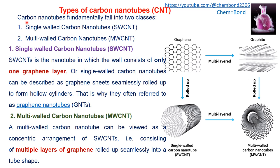Carbon nanotubes fundamentally fall into two classes: single-wall carbon nanotubes (SWCNTs) and multi-wall carbon nanotubes (MWCNTs). Single-wall carbon nanotubes are nanotubes in which the wall consists of only one graphene layer — a monolayer of carbon sheet rolled up to form a hollow cylinder, also referred to as graphene nanotubes.